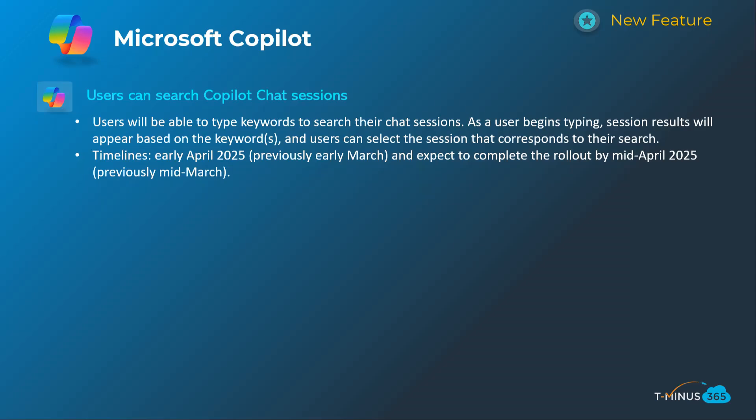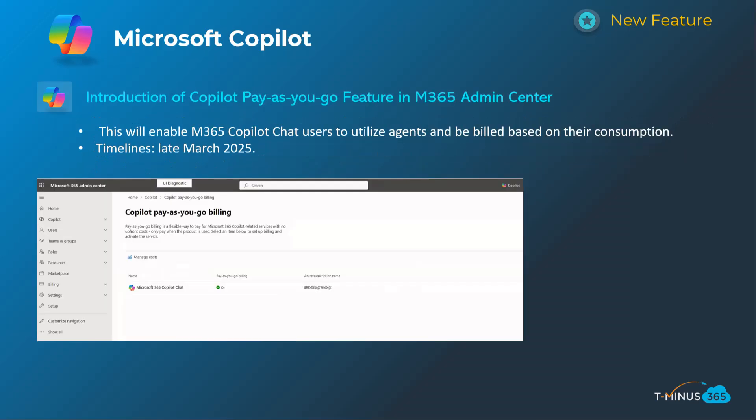Next is giving users the ability to search Copilot chat sessions based on keywords. Previously you just had to scroll through and try to find legacy chats you might have had. This is giving you that enhanced search capability. This will happen early April and be complete by mid-April.